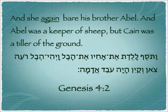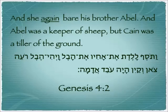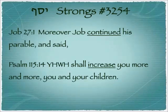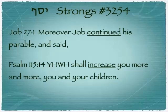The first place that we see this verb root is in Genesis 4:2, where Eve is having children and it says she again bore his brother Abel — the concept being that she continued having children after Cain, then continued and had another child. We see the first word there: Vatosef — 'and she continued.' So the root for Yosef's name — Yud, Samech, Peh — is Strong's number 3254. We see it translated as 'continued' in Job 27:1 and as 'increase' in Psalm 115:14: 'Yahweh shall increase you more and more, you and your children.'